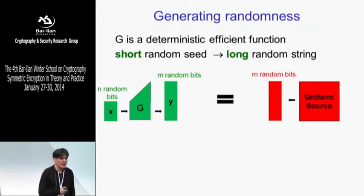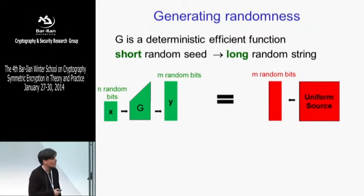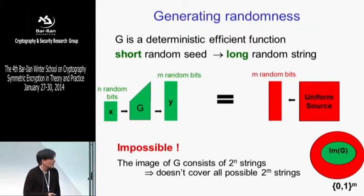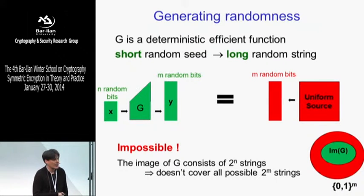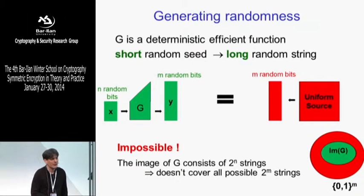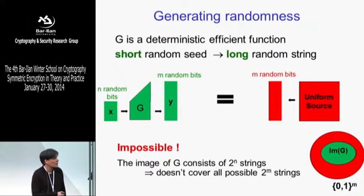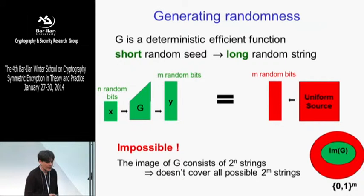This is a very nice definition. Whenever we see a definition in cryptography, we should ask whether it's achievable. The answer is no. This small picture shows exactly why: the image of this mapping contains only 2^n strings, and since n is shorter than m, it cannot cover all possible m-bit strings. So the green distribution cannot look exactly like the red distribution — some strings in the red support can't be obtained by the green.